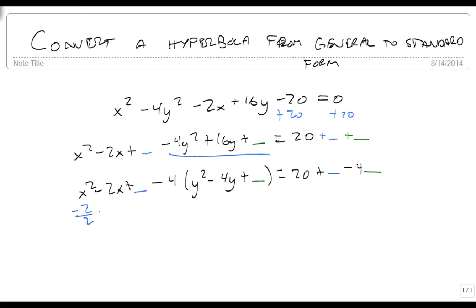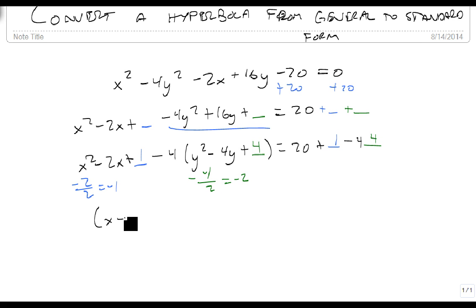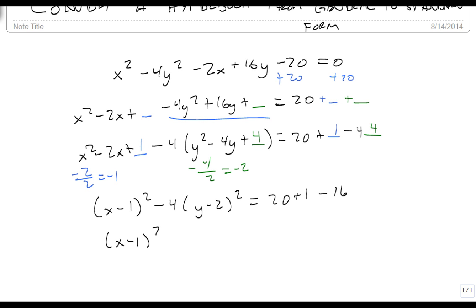Let's complete this square. Minus 2 over 2 is minus 1. Minus 1 squared is 1. And minus 4 over 2 is minus 2. Minus 2 squared is 4. So this gives us x minus 1 squared minus 4 times y minus 2 squared equals 20 plus 1 minus 16. So x minus 1 squared minus 4 times y minus 2 squared equals 5.